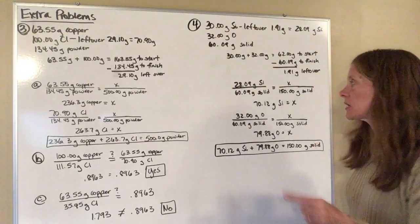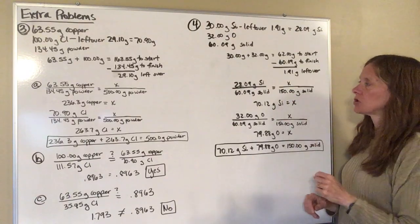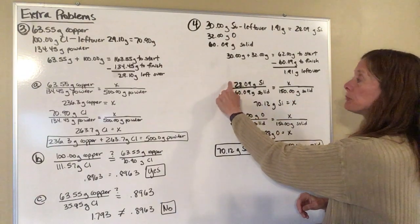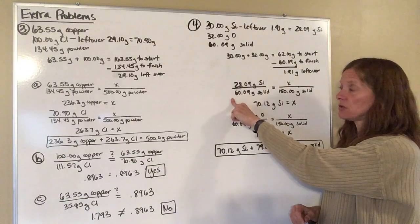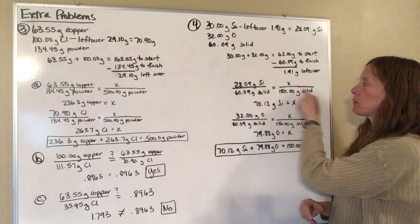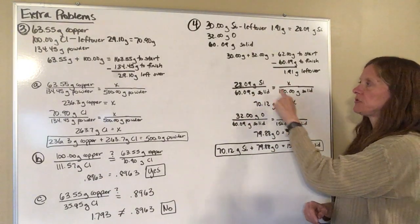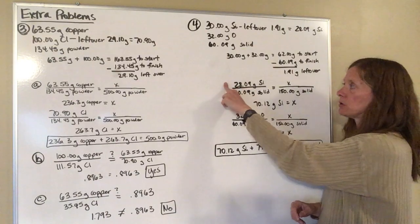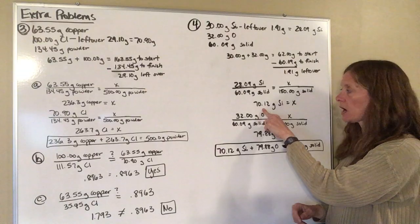Now I want to take that ratio and make 150 grams of solid instead. So I'm going to take the 28.09 grams of silicon to 60.09 grams of solid. Except now I want to make 150 grams of solid, set those up in a proportion. 150 times 28.09 divided by 60.09 will give me 70.12 grams of silicon.